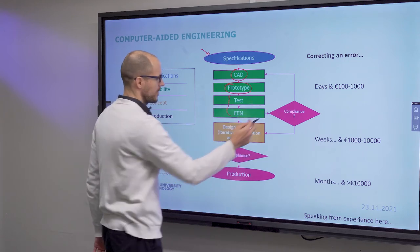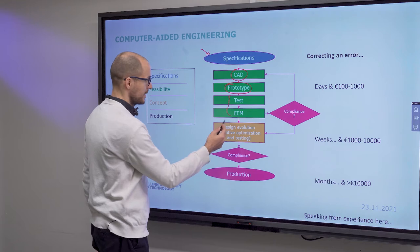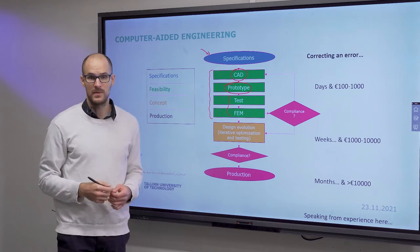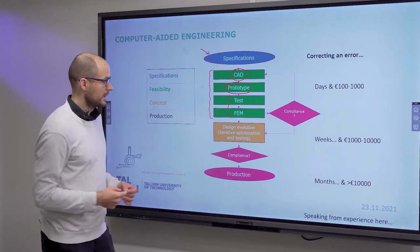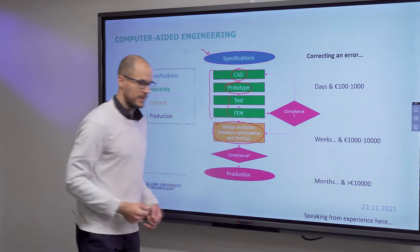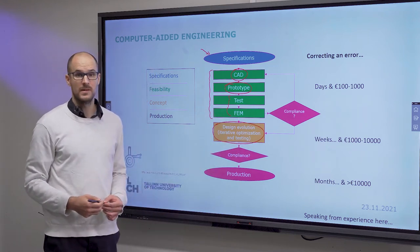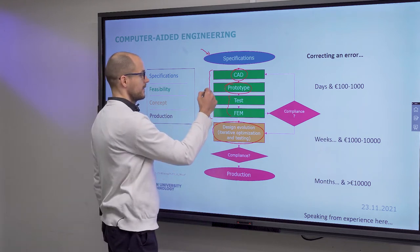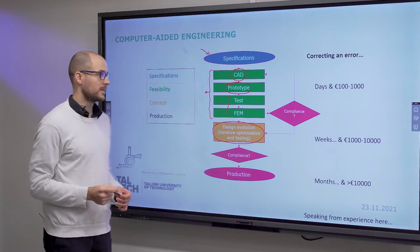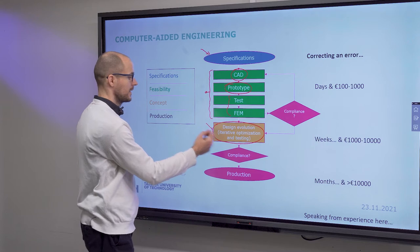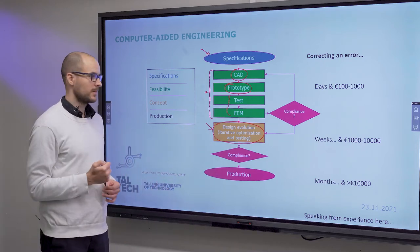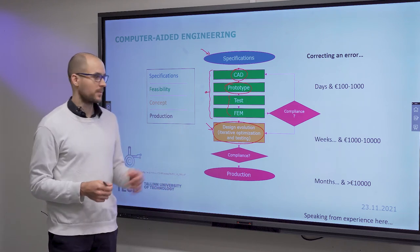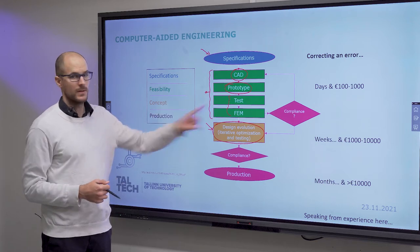After each step you need to do a compliance test. This would be your feasibility stage, where you test some concepts, some ideas, how they work. Then you move on to the design evolution phase, where in rapid iteration you test small changes in your geometry and observe the effect. Largely different ideas can be tested in the feasibility phase to pick the best one and then narrow down by iterating small changes to the geometry, either with simulation or with testing or both.